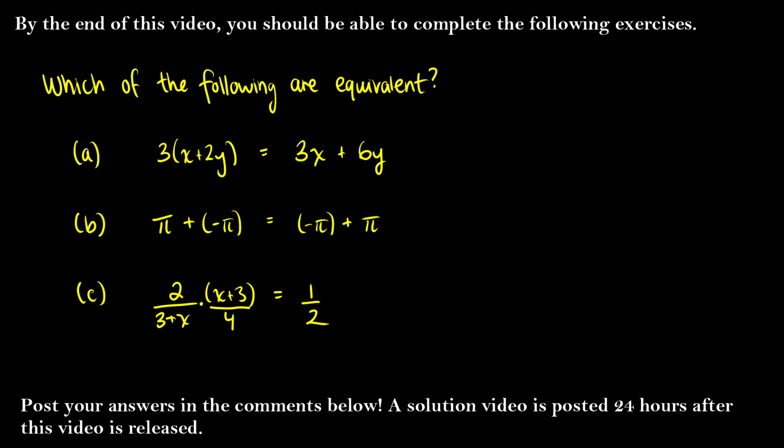In this video we're going to learn about the properties of real numbers. We're going to learn terms such as commutativity, associativity, distributivity, and also talk about how subtraction and division are related to addition and multiplication. By the end of this video you should be able to tell whether each of these is equivalent or not and why, using the names of the properties. Post your answers down below and the solution video will be out in 12 hours.